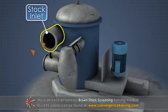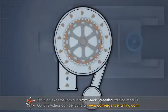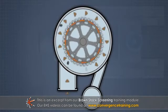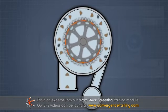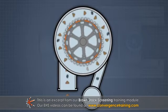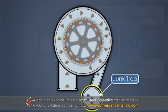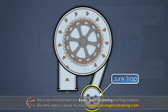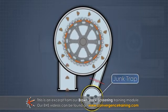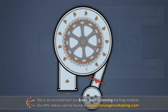Feedstock enters tangentially at the top of the vessel. This creates a swirling action which helps throw dense tramp material outward. The material which stays against the wall goes into a junk trap. This is a holding chamber outside the main screen, which is periodically isolated from the screen and its contents discarded.